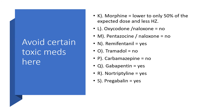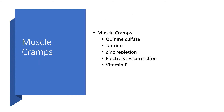Carbamazepine — no. Remember, people with liver cirrhosis will be dealing with decreased sodium, and carbamazepine could worsen hyponatremia on its own, so that's doubly problematic. Gabapentin — yes, you can give that. Naltrexone — yes, you can give. Pregabalin — yes, you can give. For muscle cramps, we can give quinine sulfate, taurine, replace zinc, correct any electrolyte anomalies, and vitamin E.